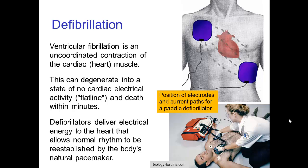Electric current is not necessarily fatal. If you have ventricular fibrillation, which is the uncoordinated contraction of the heart muscle — if the heart starts contracting in an irregular fashion — this irregularity can quickly degenerate into an actual stopping of the electrical activity of the heart, known as flatlining. If that happens, death could occur in a matter of minutes. Defibrillators are devices that deliver an electric current through the heart in an attempt to restart the heart's natural pacemaker.